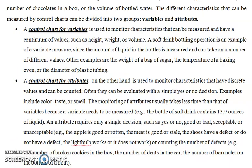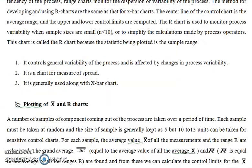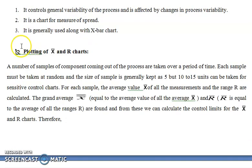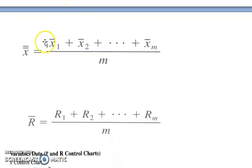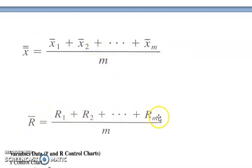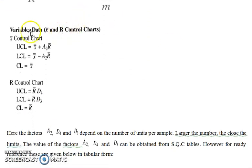Control charts for variables are of two types: x-bar chart and R chart. In the x-bar chart you calculate x-double-bar, which is calculated by adding all the means of all the samples and dividing by the number of observations. R-bar is calculated by adding all the ranges of all the samples and dividing by the number of observations.